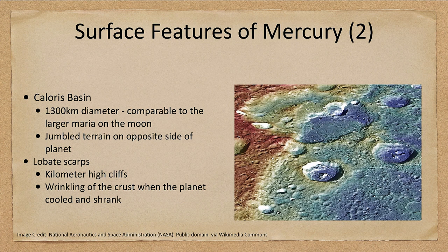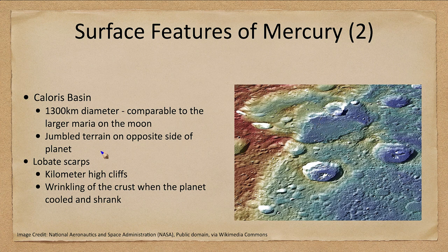Here we can see the lobate scarps in a little more detail on an angled view. The terrain is much higher in the red region and much lower in the blue, and we can see that long cliff running through it. Again, that is not just a few meters high — that is kilometers high. A really interesting feature that we see on Mercury, along with, of course, a lot of craters.